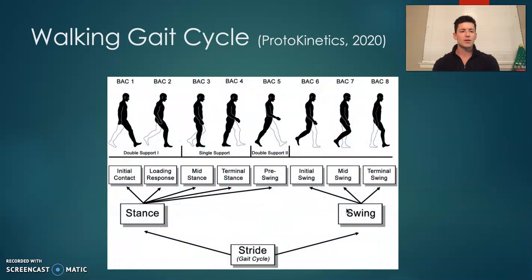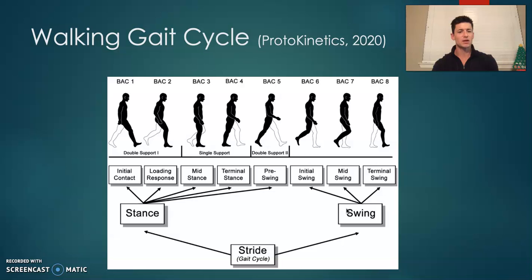Just a quick background on the walking gait cycle. Typically what you look for is the initial contact of the foot starting at the heel, going through a single supported or unilateral stance phase, landing in a double supported phase, and then starting your swing phase and then concluding back at the initial contact of the heel.